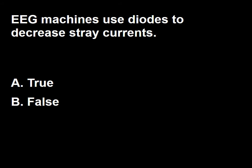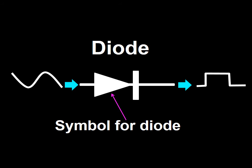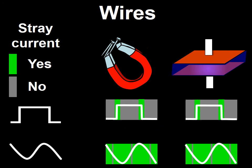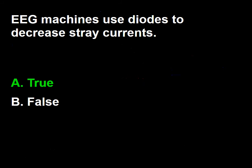Next question: EEG machines use diodes to decrease stray current — true or false? Diodes can be used to transform alternating current into direct current. As you remember from prior discussion, direct current produces less stray current than alternating current. So the answer to this question is A — true.